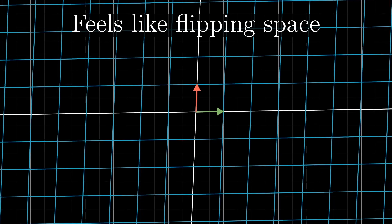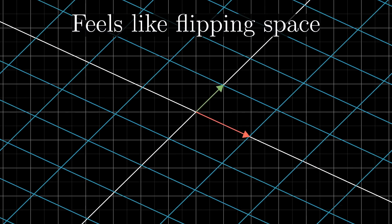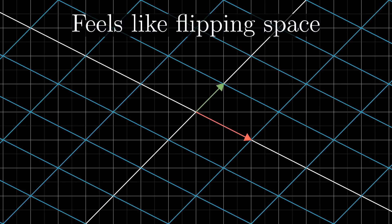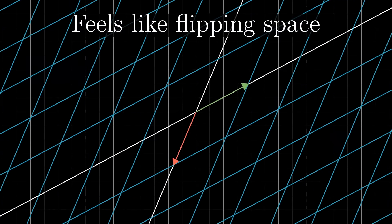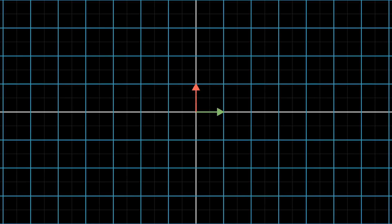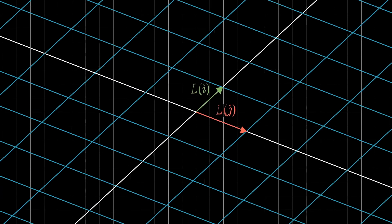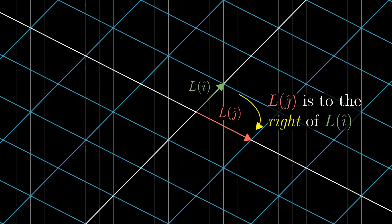This has to do with the idea of orientation. For example, notice how this transformation gives the sensation of flipping space over. If you were thinking of 2D space as a sheet of paper, a transformation like that one seems to turn over that sheet onto the other side. Any transformations that do this are said to invert the orientation of space. Another way to think about it is in terms of i-hat and j-hat. Notice that in their starting positions, j-hat is to the left of i-hat. If, after a transformation, j-hat is now on the right of i-hat, the orientation of space has been inverted.